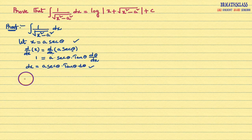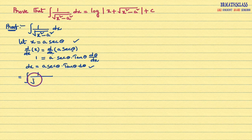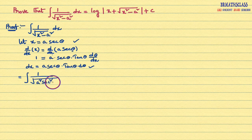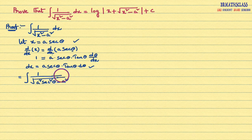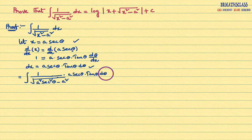These two things — x equal to a secant theta and dx equal to a secant theta tan theta d theta — I will substitute in the question. That equals the integral of 1 divided by root over x squared. What is x squared? x squared is a squared into secant squared theta. So in place of x squared I write a squared secant squared theta, and in place of dx I write a into secant theta into tan theta d theta.